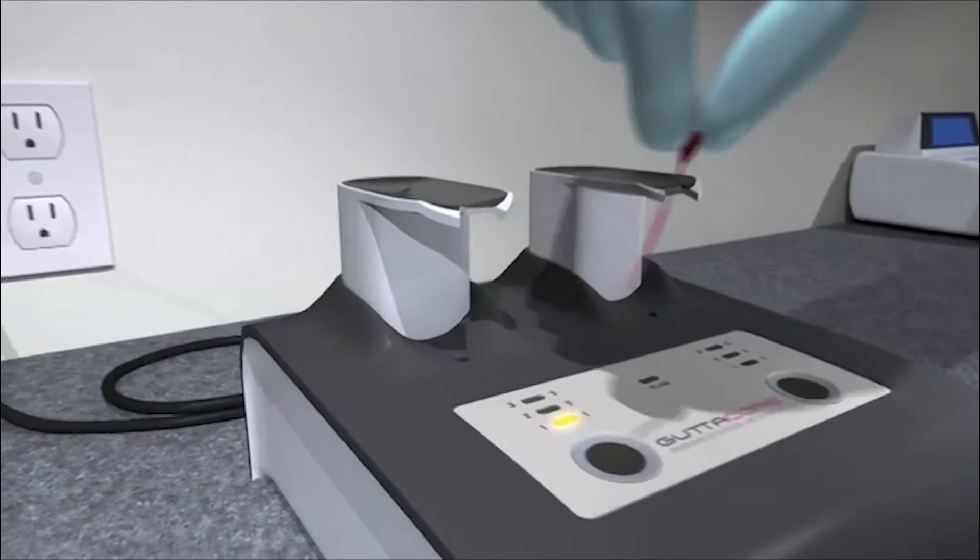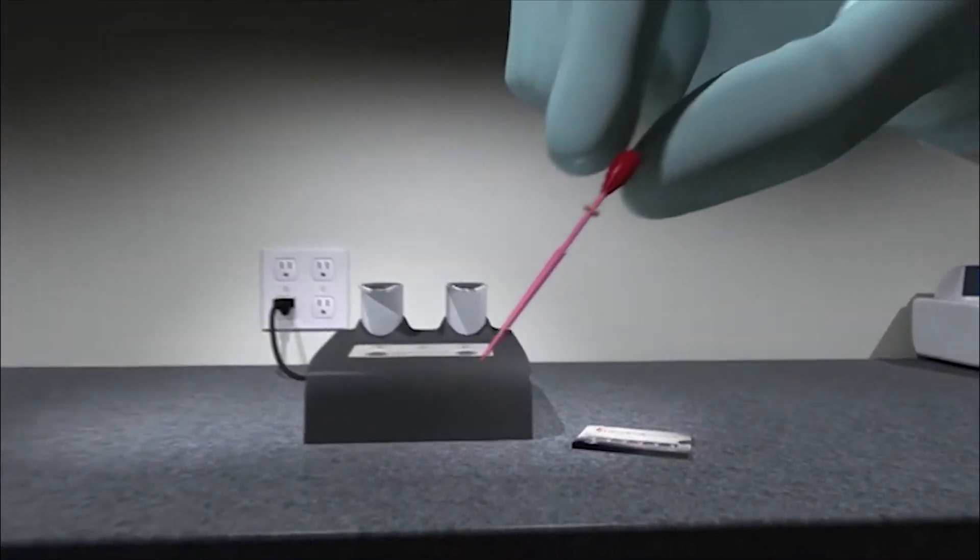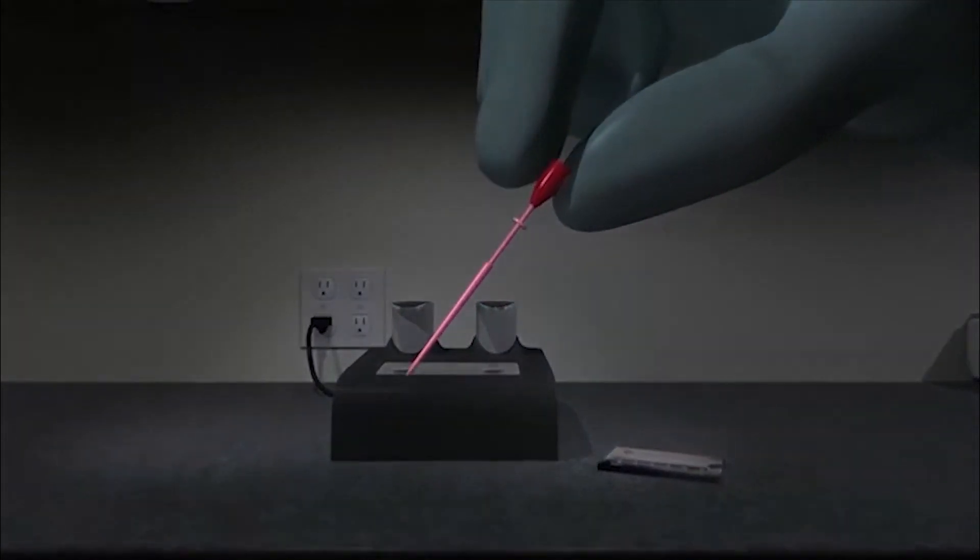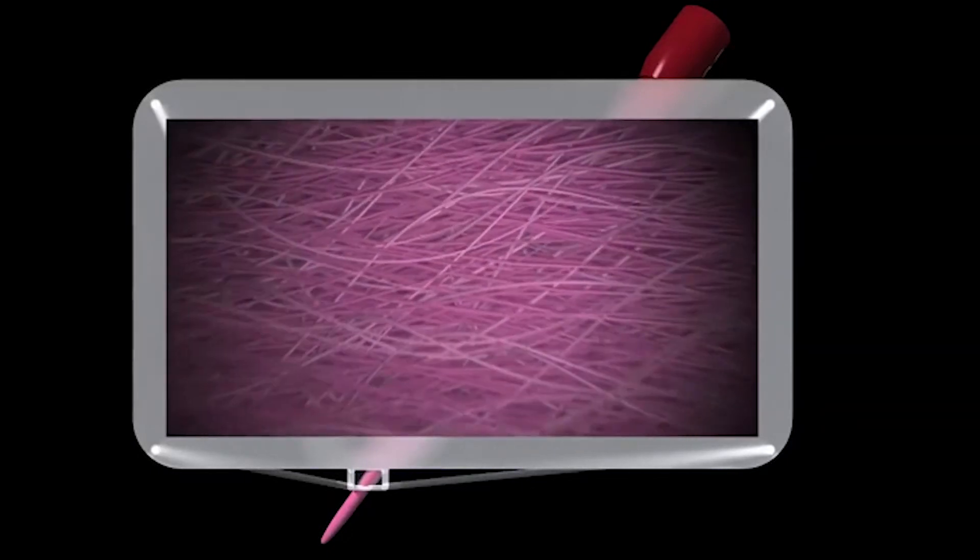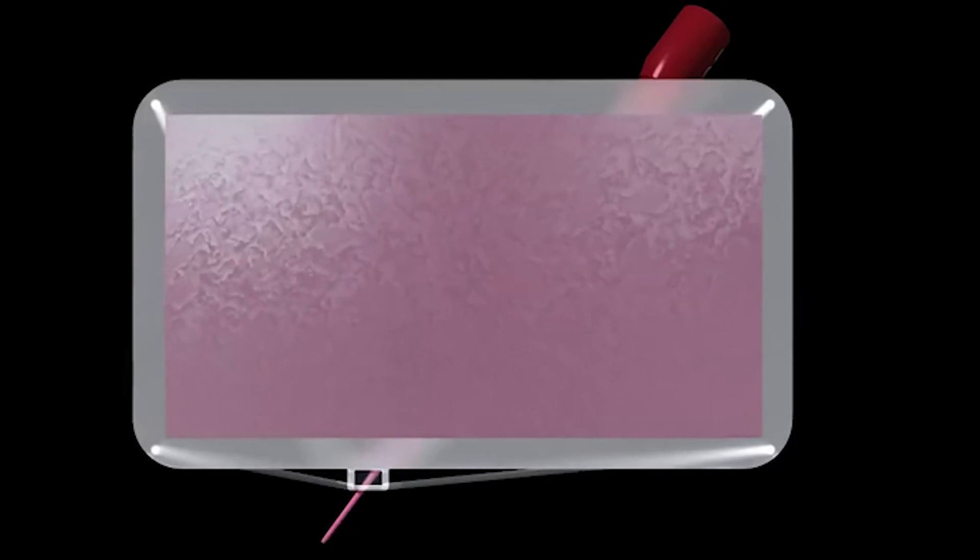Guttapercha Core Obturators are coated with the same flowable alpha-phase Guttapercha that's provided predictable fills for more than 20 years. But Guttapercha Core is changing obturation from the inside out. As the camera zooms in, we see the difference: a pink core made of cross-linked Guttapercha.